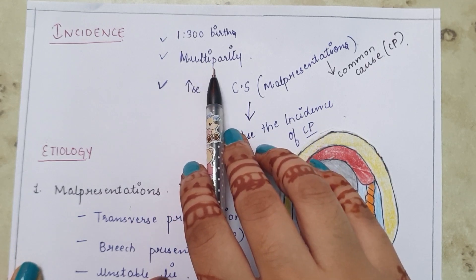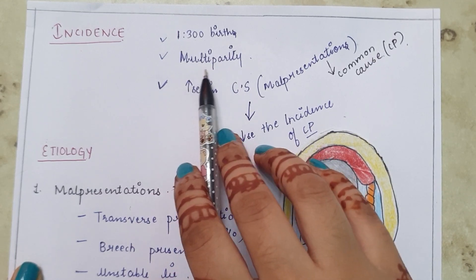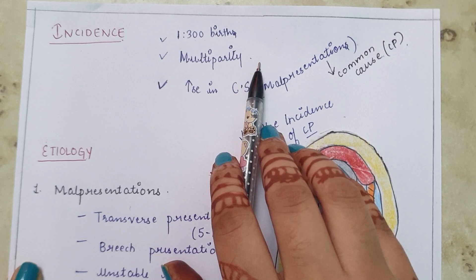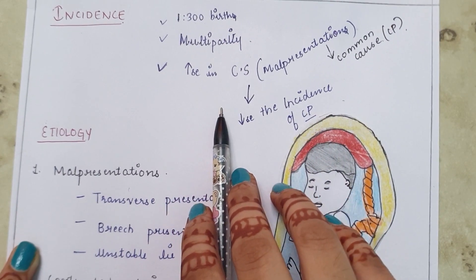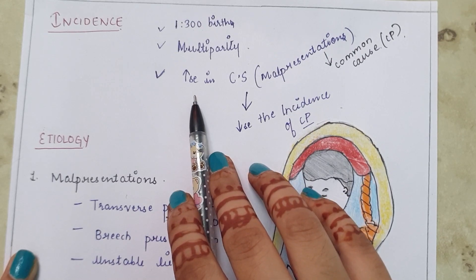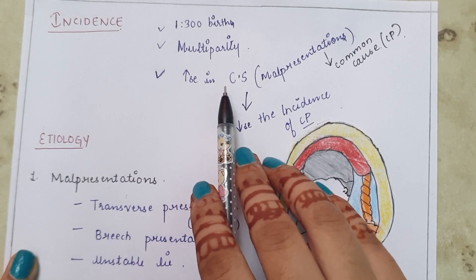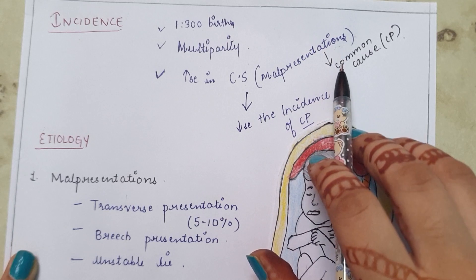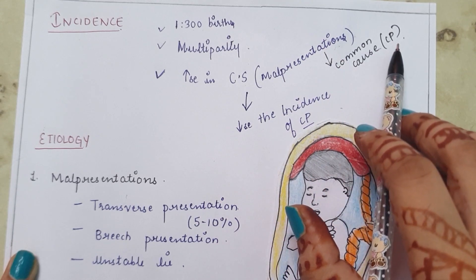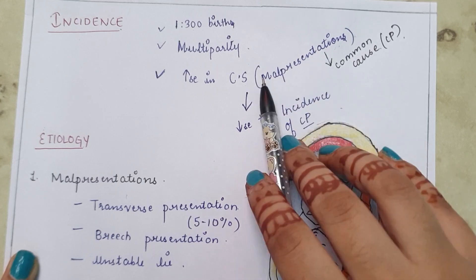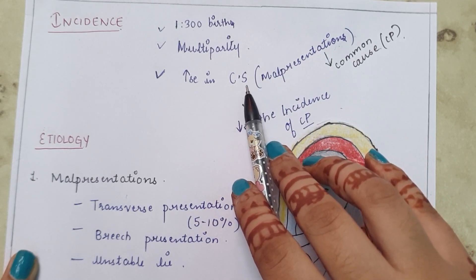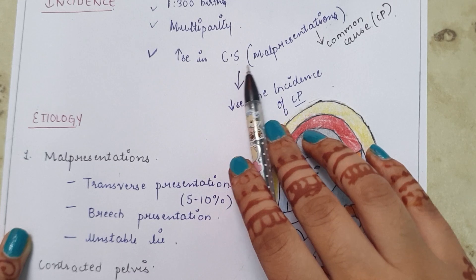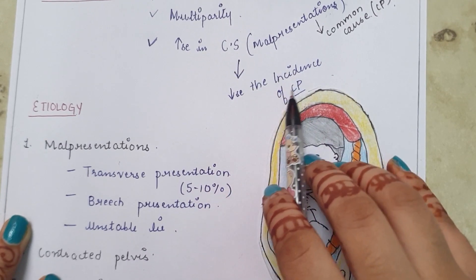The incidence is higher among multiparous women — women who have been pregnant more than once. Nowadays the incidence of cord prolapse has decreased because of an increase in cesarean sections in cases of malpresentation. Since malpresentations are a common cause of cord prolapse, performing cesarean sections avoids complications during vaginal delivery, thereby reducing the incidence.